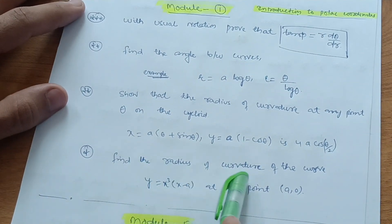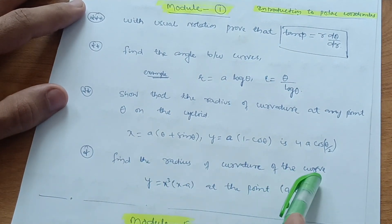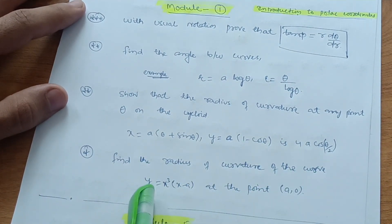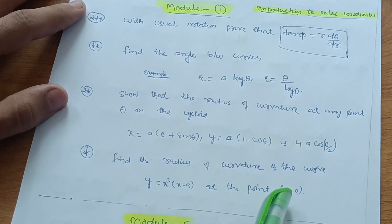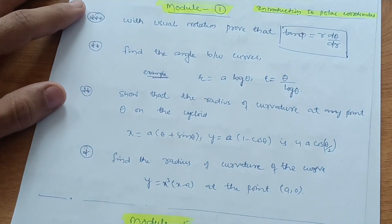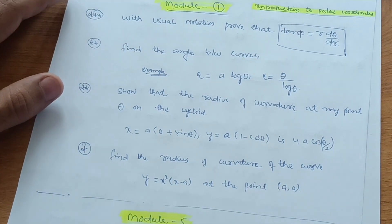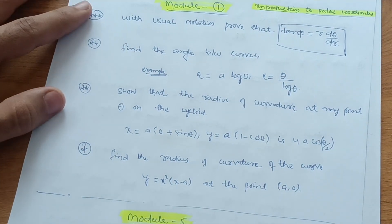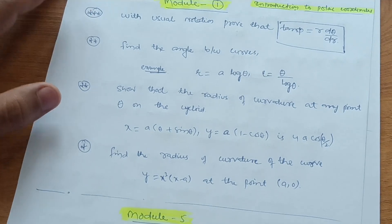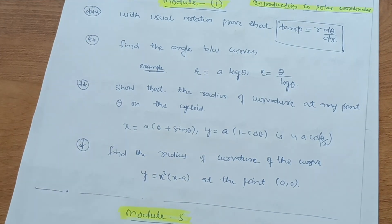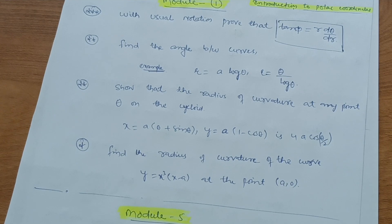Also, find the radius of curvature of the curve y = x³(x − a) at the point (a, 0). These four concepts are enough for Module 1. You can easily score 15 or 16 marks in this particular module.